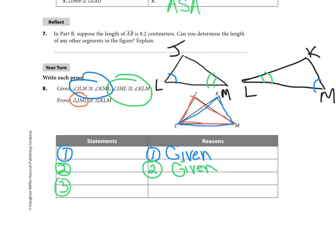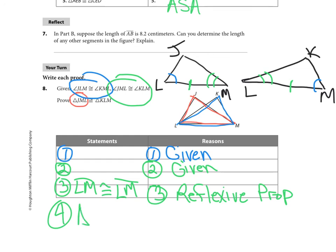Next, we need, look, I have two angles. I need the side. So I could say LM is congruent to LM because of reflexive property. And now I know that those two triangles are congruent. And I'm going to shortcut a little bit, not write out all the letters because of angle, side, angle.